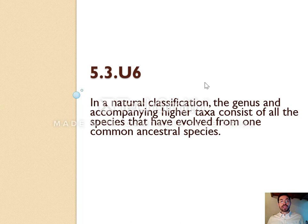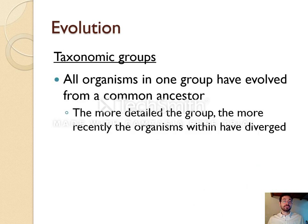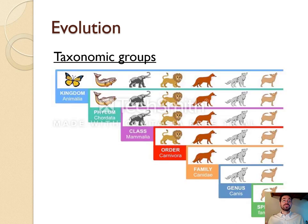In our classification of nature, the genus and all accompanying higher taxa consist of all the species that have evolved from a common ancestor. All animals share a common ancestor, more distant than the common ancestor of all chordates, which is more distant than the common ancestor of all mammals, and so on. The further down you go, the more recent the common ancestor. All organisms evolved from LUCA — the last universal common ancestor — but the more detailed the group, the more recent the shared ancestor.